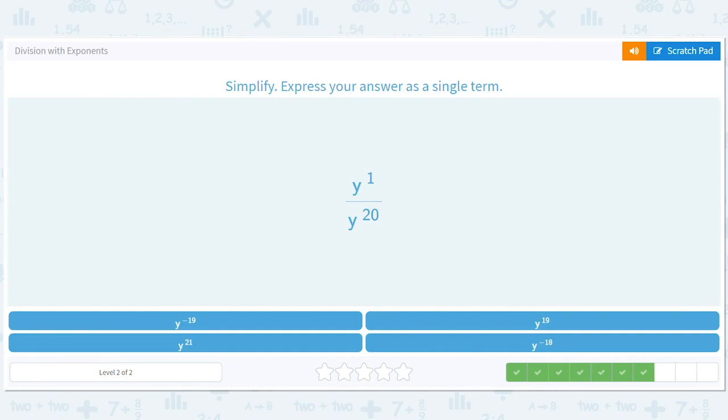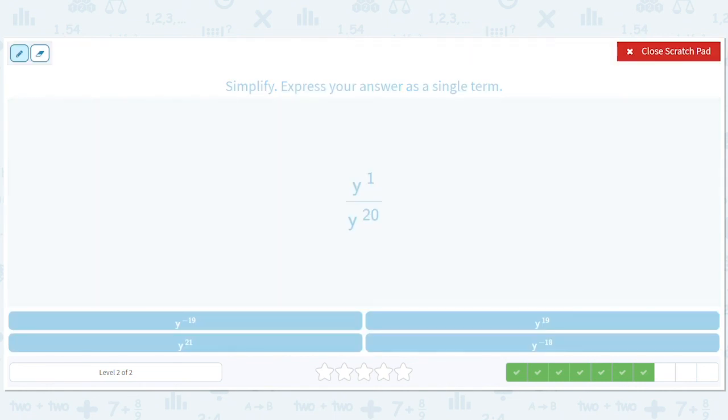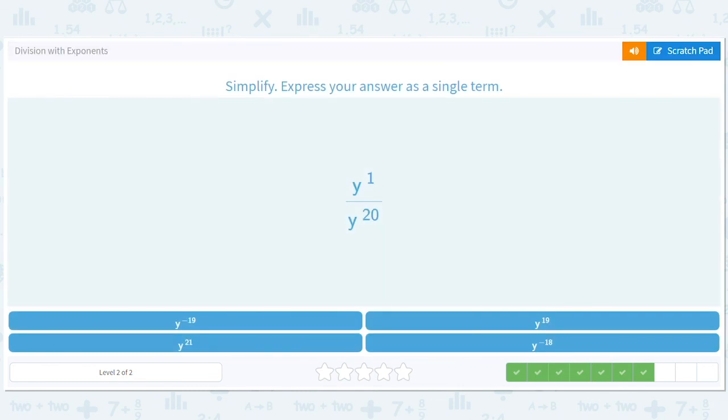So again what is it going to be, positive or negative exponent? Well we know it's negative because the 20 is bigger on the bottom. So if we do 20 minus 1 we get 19 but we know it's negative so it's y to the negative 19. Or you could say 1 minus 20 equals negative 19. Whatever you want, so y to the negative 19.